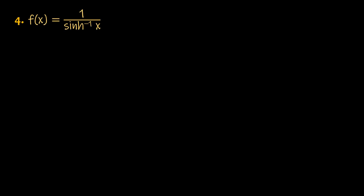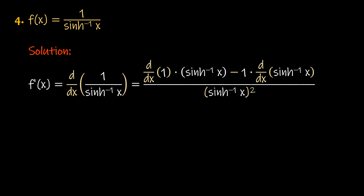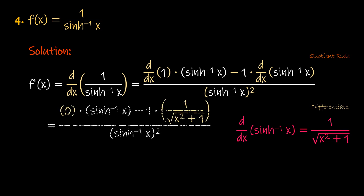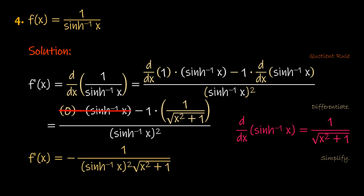Number 4: f of x equals 1 over the inverse hyperbolic sine of x. Solution: f prime of x is the derivative of f with respect to x. Apply the quotient rule. Differentiate using a basic differentiation rule and an inverse hyperbolic function rule. Simplify the derivative. Therefore, f prime of x equals the negative of 1 all over the product of the square of the inverse hyperbolic sine of x and the square root of quantity x squared plus 1.